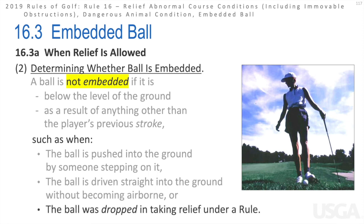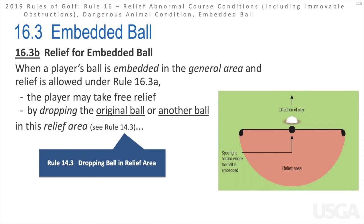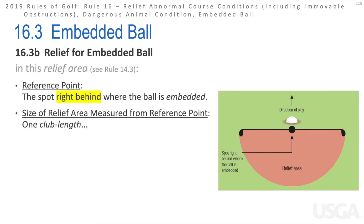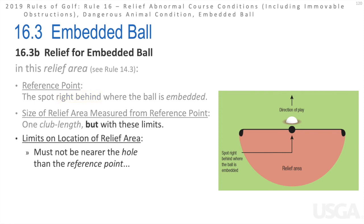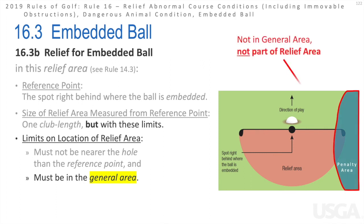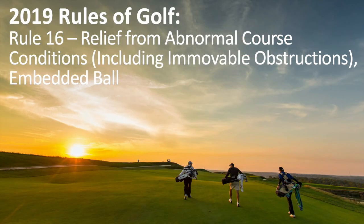When taking relief from an embedded ball in the general area, the player may drop the original ball or substitute another ball. The reference point is the spot right behind where the ball was embedded, and the relief area is one club length, not nearer the hole, and must remain in the general area. If a penalty area crosses into the relief area, that portion is excluded from where the ball can come to rest.